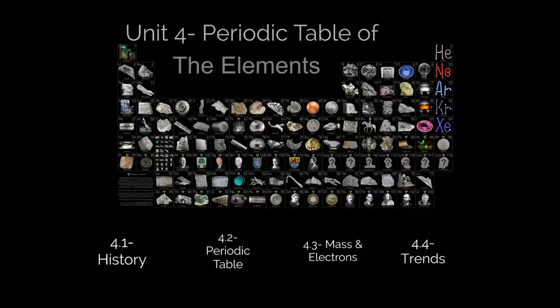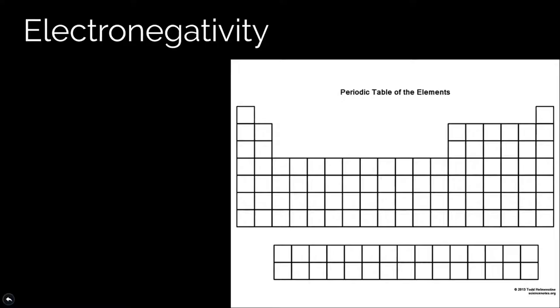In this last section, we're going to go over some of the trends of the periodic table. There's a lot of information in this periodic table, and it's set up in a very particular way. So this is just another layer of information that we can get from it. The vocabulary in this one is actually a really short list: electronegativity, atomic radius, and ionization energy.